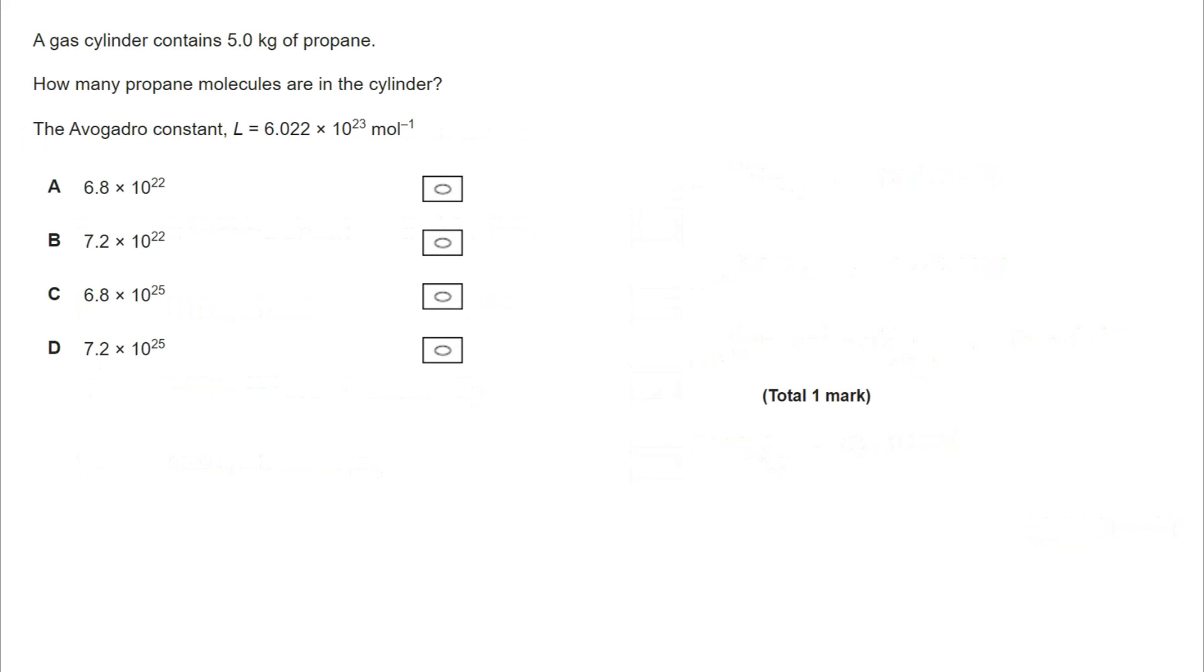Next question. We have a gas cylinder with five kilograms of propane. How many propane molecules are there? And we're given Avogadro's number, as we always will be, unless that's what we're calculating. So let's take a look. I have a mass of five kilograms. I need to convert that to grams, multiply by a thousand. I can then use my mole equation, N is M over MR, and I can put the figures in.